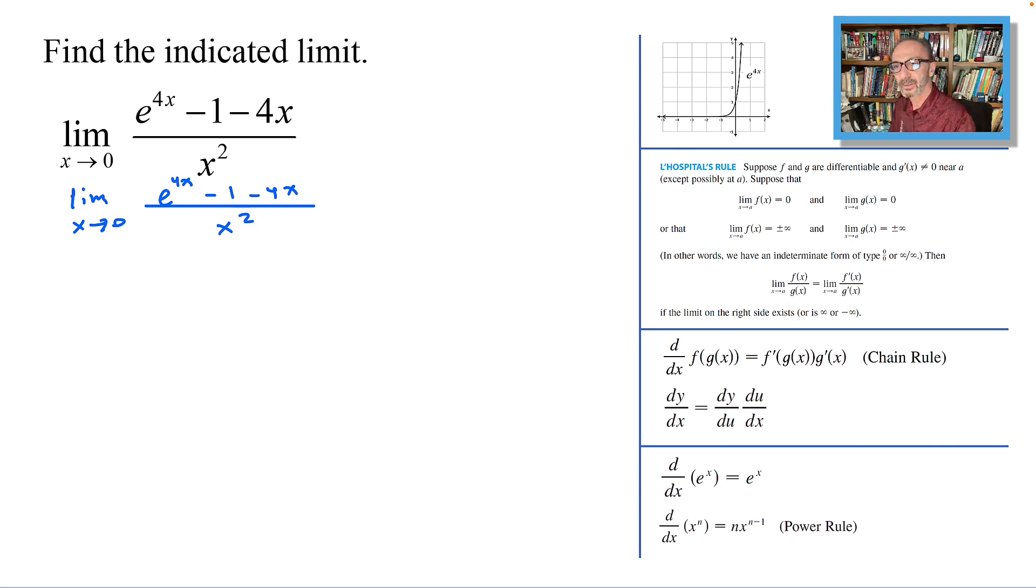If you attempt to plug in 0 for x, the top part gives me e to the power 0 which is 1 minus 1, that's a 0, minus 4 times 0 which is 0, so it's going to give me a 0 on top. In the denominator it's x² or 0² which is 0, so we do have the limit has the form 0 over 0.